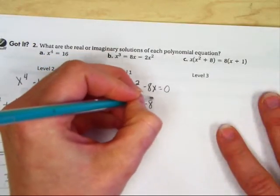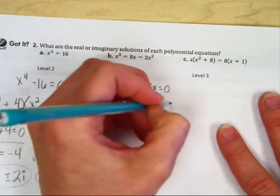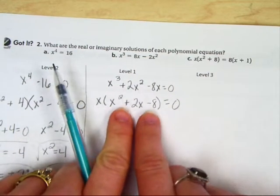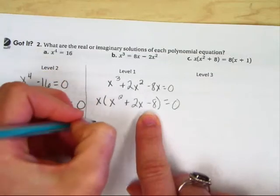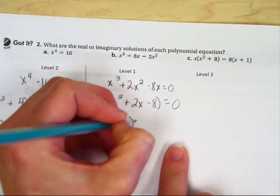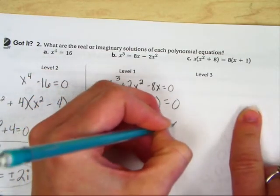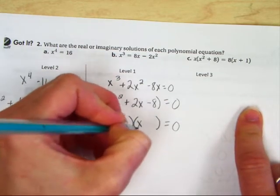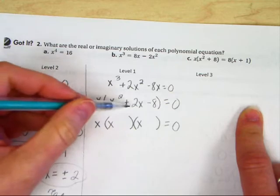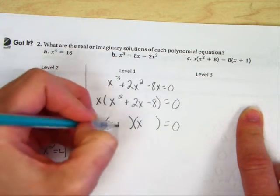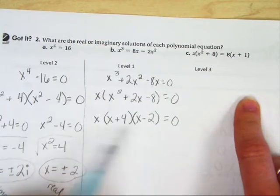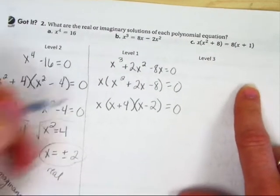So by pulling out that x, you are able to get a trinomial, and you know how to factor trinomials. x² breaks down to x and x, and to get a positive 2 from this negative 8, we need a plus 4 and a minus 2. Once we get it broken down as much as possible by factoring, we set each one equal to 0.